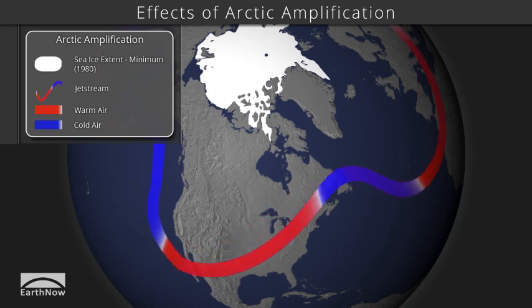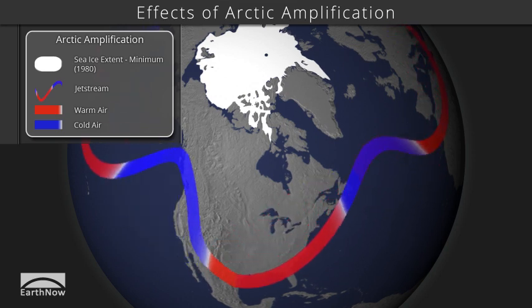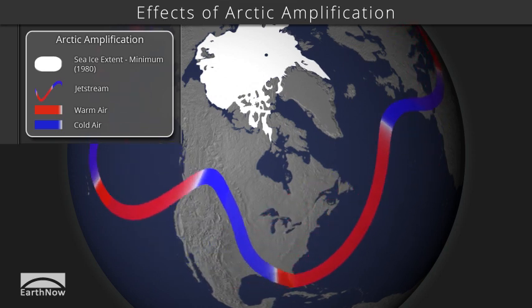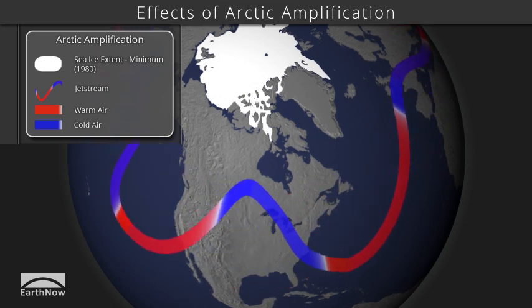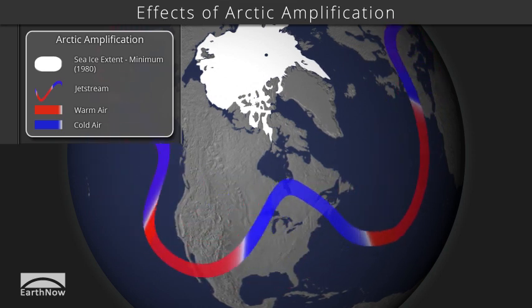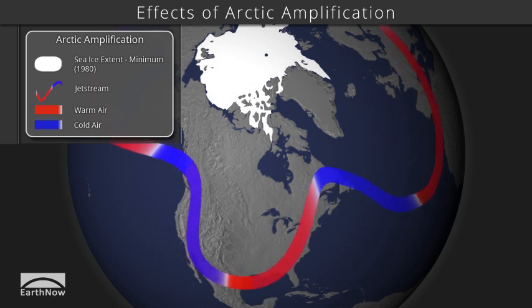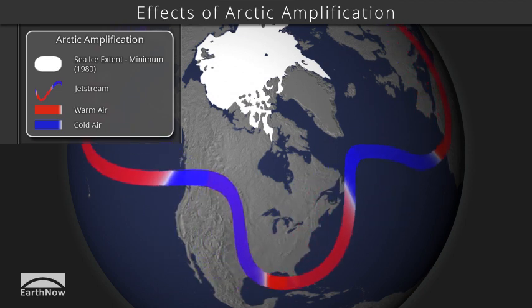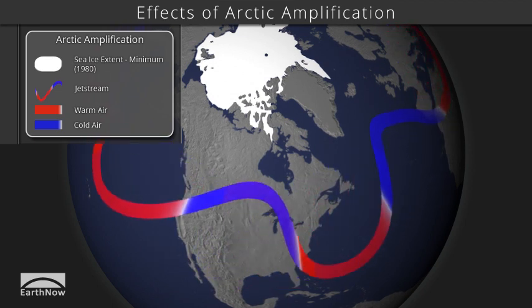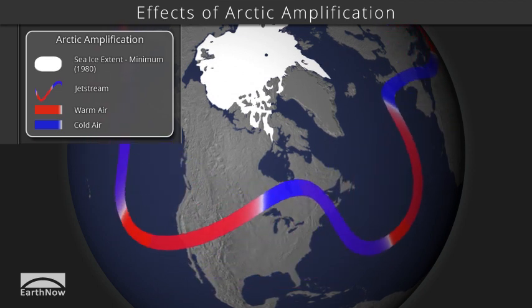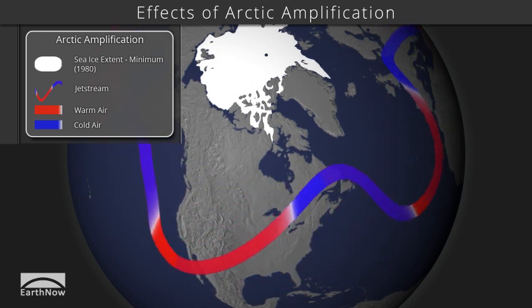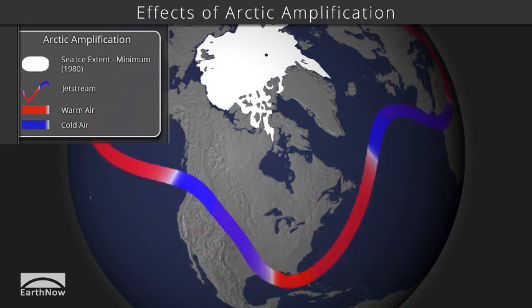Storms develop and track along the jet stream, pushing cold air south — shown as the blue portion of the jet stream — and warm air north — shown as the red portions of the jet stream.